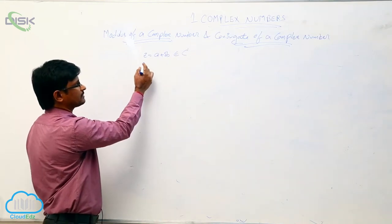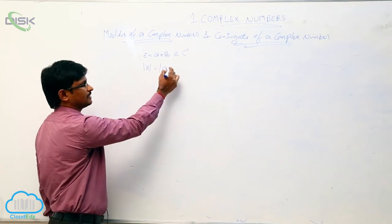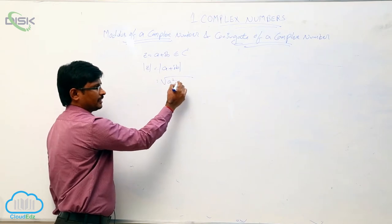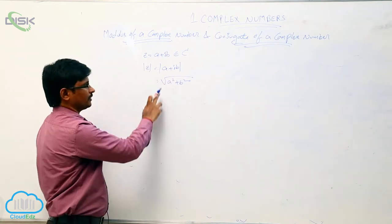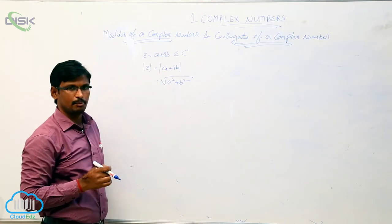The mod of complex number is denoted by mod z and it is defined as square root of a square plus b square. That is the square root of real part square plus imaginary part square.